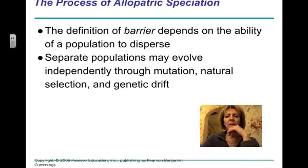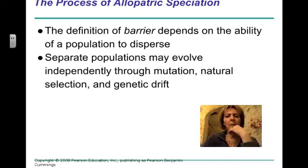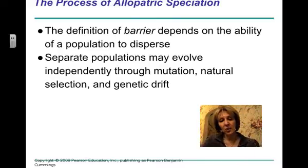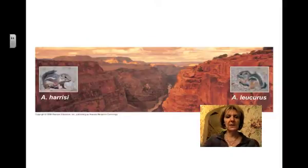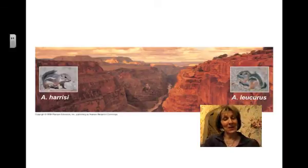The barrier depends on the ability of the population to disperse — it could be a body of water, though that wouldn't work for aquatic organisms, or it could be mountains or a river. Then the populations would be separated and natural selection, mutation, and genetic drift would act on them to become two separate species. This is an example of a small chipmunk that is actually two different species living on either side of the Grand Canyon — obviously a very big geographical divide.